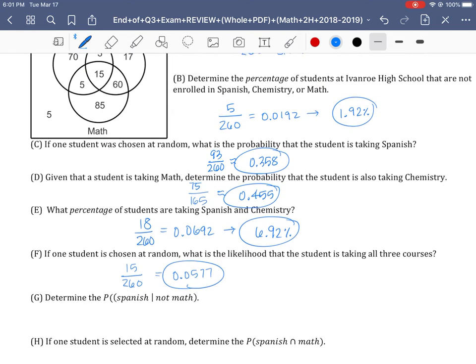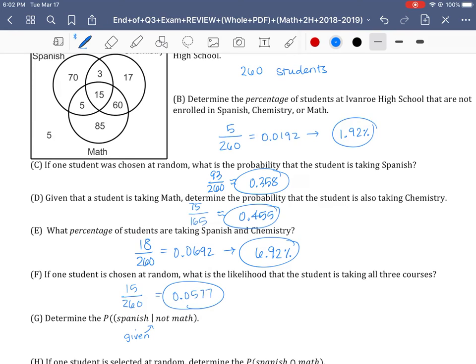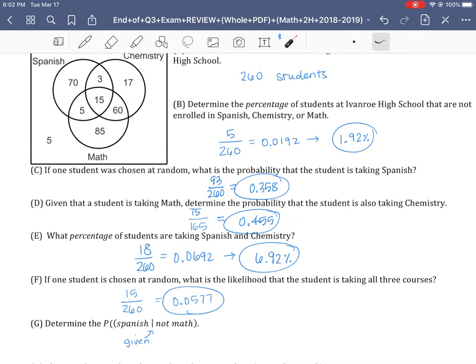Lastly, determine the probability a student is taking Spanish. Remember this symbol right here means given. That restricts our denominator. We're not looking at the total anymore. So what's the probability they're taking Spanish given they're not enrolled in mathematics? If we look up here, not in math would be all of these guys outside the math circle. We don't want to go into the math circle. But if we add all of these up, that gives us what our denominator would be. That ends up being 70 plus 5, 75, plus 3 and 17, which is 20, so we get 95 here as our denominator. And out of that, we're not leaving those 95. So that's our group from here on out. And how many of those are taking Spanish? We look up here and it looks like only these 73 are within that Spanish circle. So those 73 would be included here in our probability.